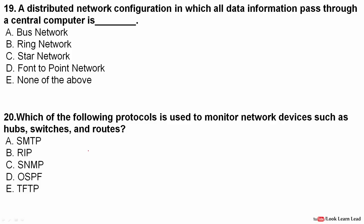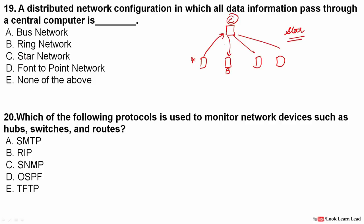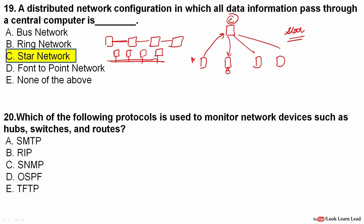A distributed network configuration in which all information passes through a central computer — what type of network is this? If node A wants to send data to node B, it sends the data to the central computer, which then forwards it to B. This is called a star network. In a bus network, computers are connected in series along a shared bus. In a ring network, each computer is connected to two neighbors and the last connects back to the first. The answer here is star network.